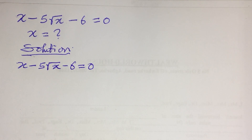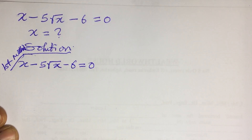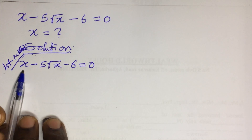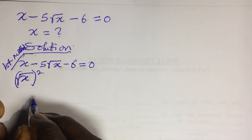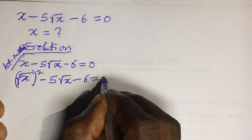Either method will give us the same result. For the first method, we are going to solve this radical equation directly without substituting or bringing in any other variable. We introduce the radical to x, expressing x as the square root of x, squared: (√x)² minus 5√x minus 6 equals 0.